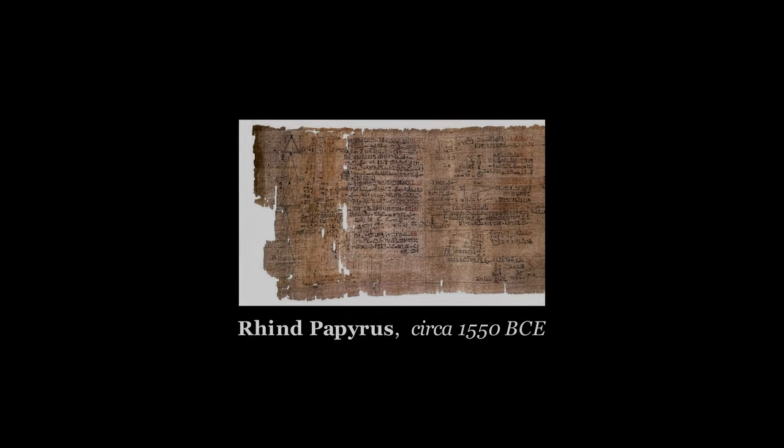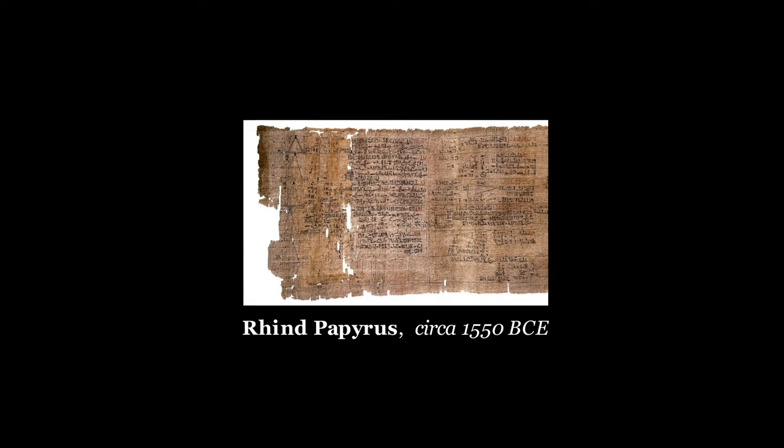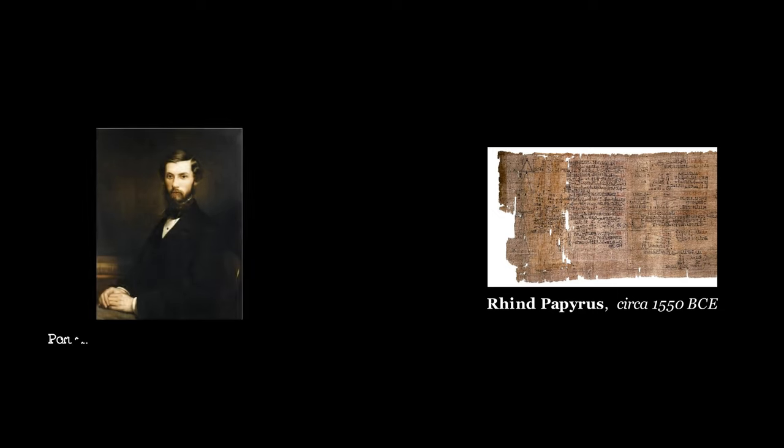The Rhind papyrus was dated around 1550 BCE. It was found during an illegal excavation and bought by Alexander Henry Rhind in 1858 in Luxor, Egypt.